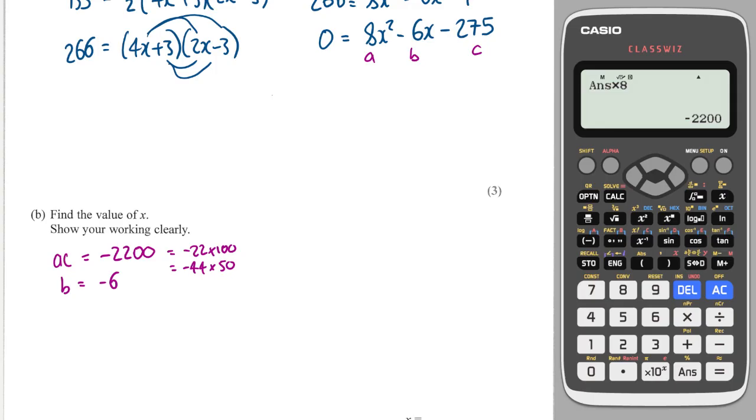And that's going to help me, because those two factors have a gap of 6. So, I know that my two numbers now are minus 50, because I want the bigger one to be negative, to get the negative 6, and plus 44.